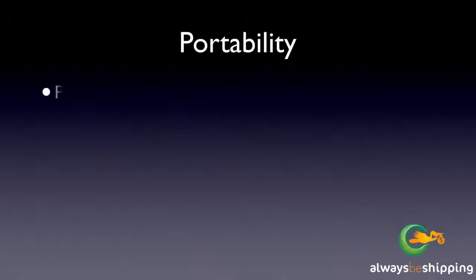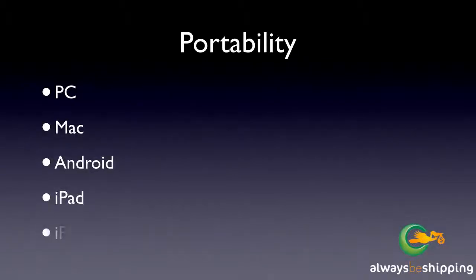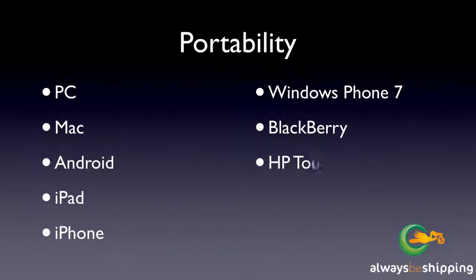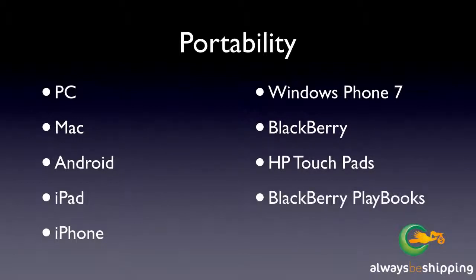Your audience can read Kindle content or ebooks that you publish there from a PC, from a Mac, from an Android phone, from iPads, from iPhones, from Windows phones, from Blackberries — and they're working on getting it out to the HP TouchPads and the Blackberry PlayBooks, the little tablets that they're coming out with.